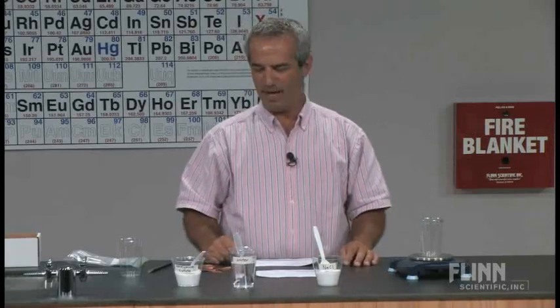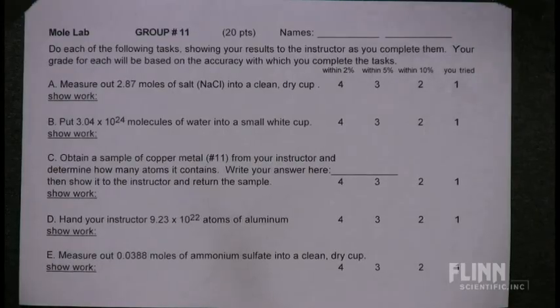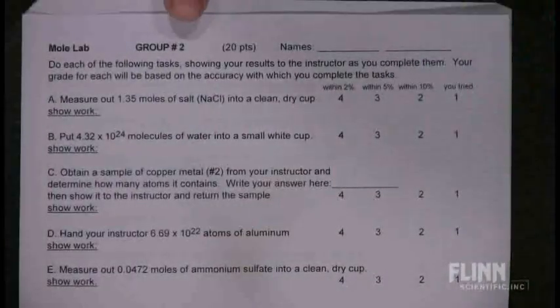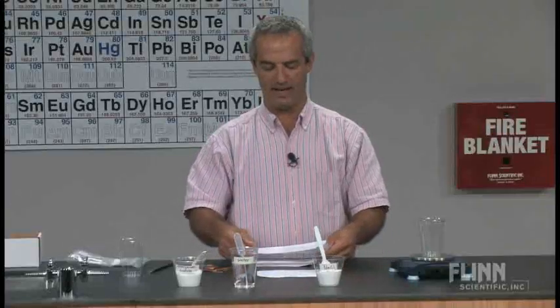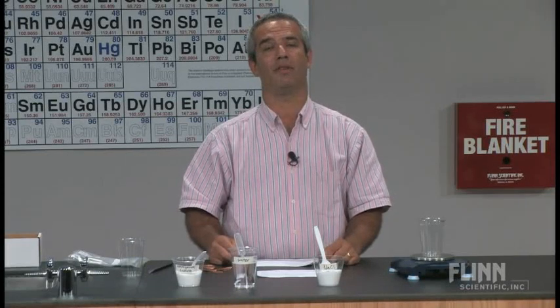A couple things they have to keep in mind. One is they have to figure out how to measure out 2.87 moles of sodium chloride. Another group would have slightly different tasks, like 1.35 moles of sodium chloride instead. How do they do that? They measure it out by weighing it — that's the whole idea of the mole concept. They're counting atoms by weighing.